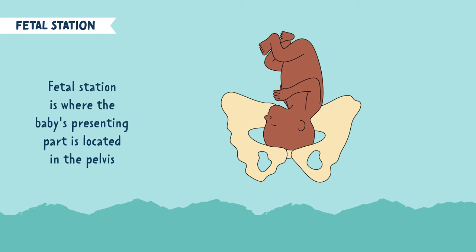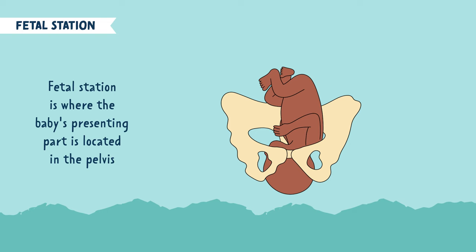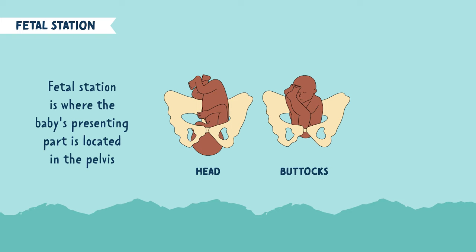Today we're going to talk about fetal station. Fetal station is where the baby's presenting part is located in the pelvis. The presenting part is the part of the baby's body that is closest to the exit route, aka the uterus. So this could be the head, which is most commonly seen, the buttocks, or the shoulder.